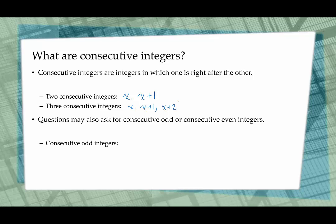How do we represent consecutive odd integers? If we call the first one x, the next one would be x plus 2 — so 9 is 7 plus 2, and negative 17 is negative 19 plus 2. So to find the next odd integer, we add 2.